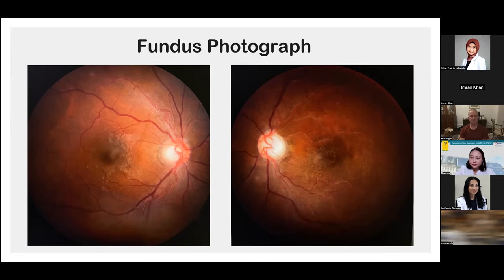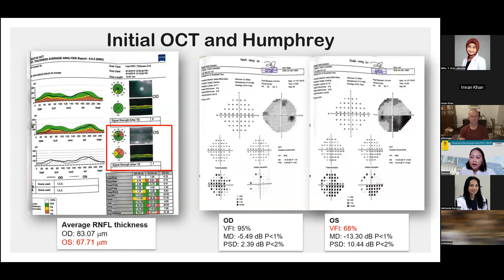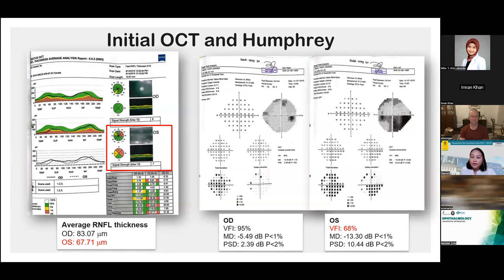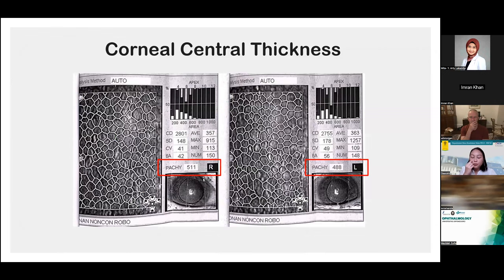To support our diagnosis, we performed optical coherence tomography and Humphrey visual field examination. OCT revealed a normal neuroretinal rim in the right eye, but remarkable thinning of the superior and temporal quadrants in the left eye. Average retinal nerve fiber layer thickness was also thinner in the left eye. Visual field examination was reliable; the right eye showed no significant defect, while the left eye showed an inferior arcuate defect corresponding with the OCT result.